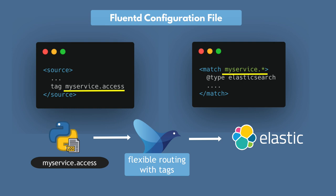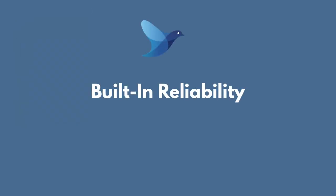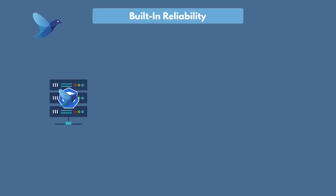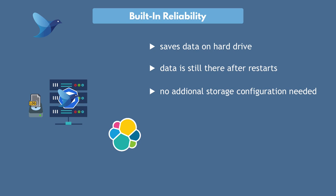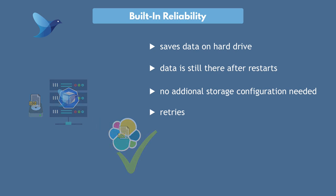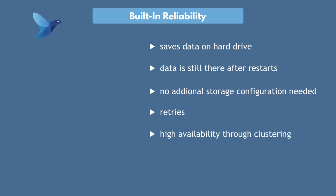That's basically how you can use Fluentd for your logs. One big advantage of Fluentd is its built-in reliability. When Fluentd collects and processes the data, it saves it on hard drive until it sends that processed data to the configured output destination. This means that if the Fluentd pod restarts in the middle of collecting or processing data, or the whole server restarts, the data will still be there and when Fluentd starts again it can pick up from where it left off — and you don't have to configure any additional storage like a Redis database. If the output target is not accessible — say Elasticsearch is down or MongoDB isn't accessible — Fluentd will handle that by automatically retrying to send logs until that endpoint becomes available again. You can also cluster your Fluentd setup to make it even more performant and highly available.